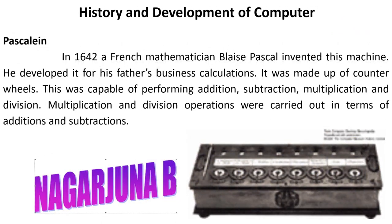The next computer is the Pascaline. In the year 1642, a French mathematician Blaise Pascal invented this machine. He developed it for his father's business calculations. It was made up of counter wheels and was capable of performing addition, subtraction, multiplication, and division. However, the multiplication and division operations were carried out in terms of addition and subtraction. We can see the Pascaline machine in the image.